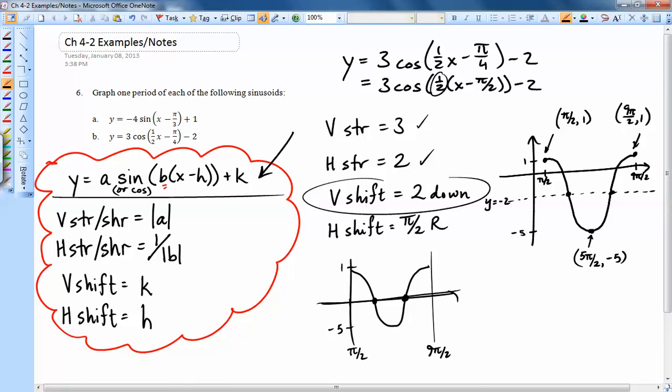So the x value is going to be the average of π/2 and 5π/2. So that's 6π/2 when you add them. And then you've got to cut that in half. So it's 3π/2 comma negative 2. And this one's going to be 7π/2 comma negative 2. And now you've got the graph of this.